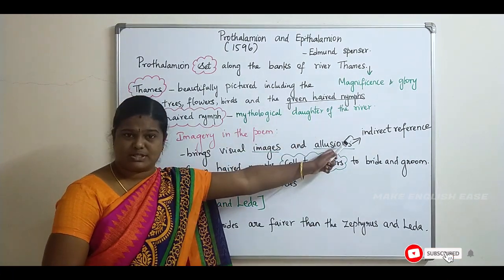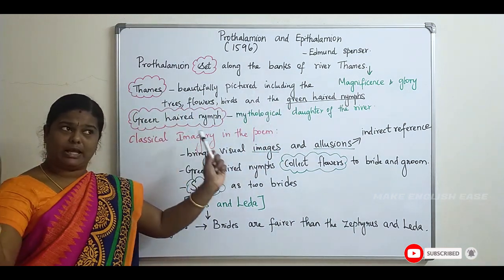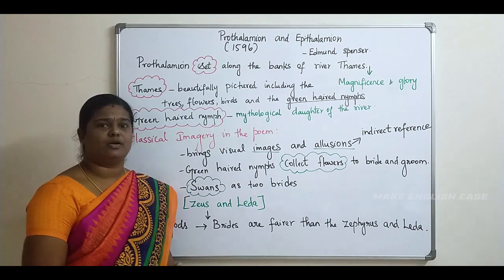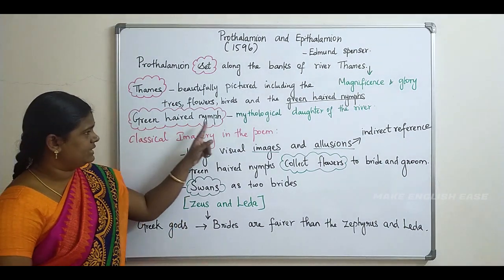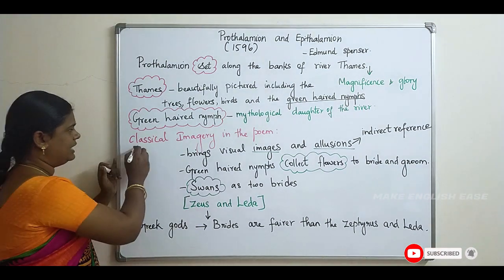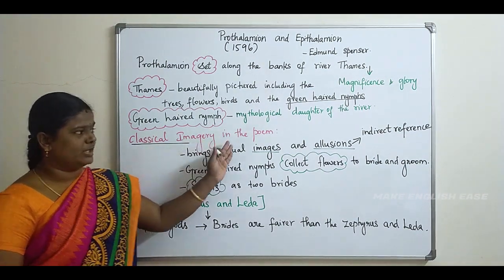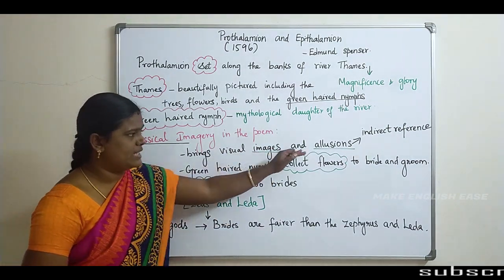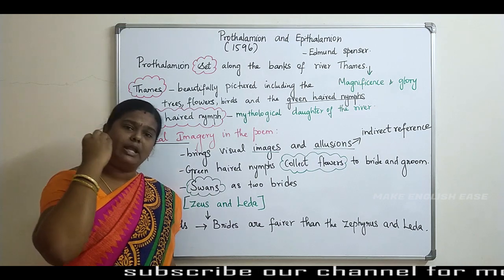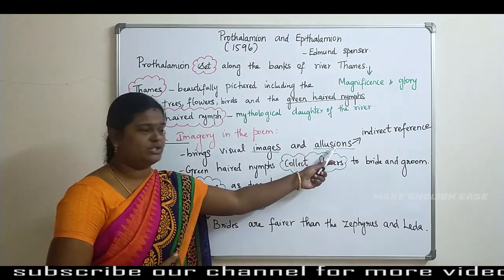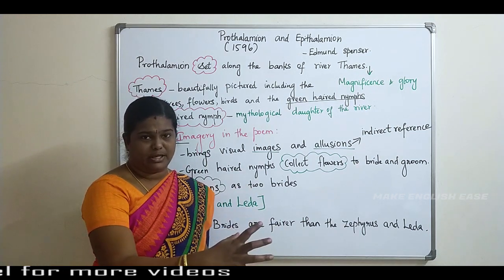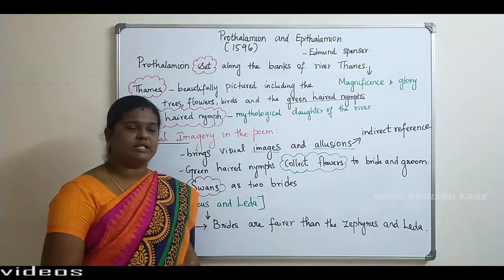He uses the green-headed nymphs, and not only the river — all the settings: trees, flowers, birds, etc. The green-headed nymphs are the mythological daughters of the river. He brings classical imagery, visual images, and allusions in the poem. Allusions means indirect references. Everything is based on allusions.